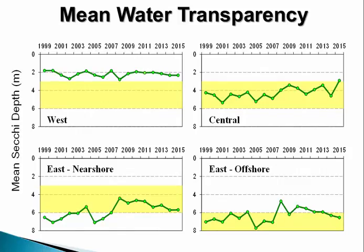Similarly for water transparency, this is measured as Secchi depth. The y-axis goes from zero at the top down to eight meters at the bottom, so the higher on the graph the lower the number, meaning the more turbid the water is; the farther down on the graph the clearer the water. The west basin: same story — the water is murkier, not as clear as we'd like. The central basin is within the target Secchi depth corresponding to mesotrophic conditions. The east nearshore Secchi depth has been decreasing over the past many years but still within the target range, and the east offshore Secchi depth has also been decreasing and during 2015 was in the range we're after.